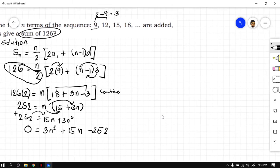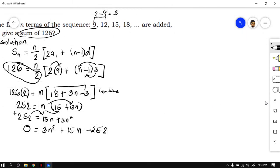So if there's a quadratic equation, that means you have to solve for n by factoring the given quadratic equation. But before factoring it, if you will observe, this equation is divisible by 3. So let's first simplify the equation by dividing everything by 3. 3n squared divided by 3 is n squared, 15n divided by 3 is positive 5n, and negative 252 divided by 3 is negative 84.